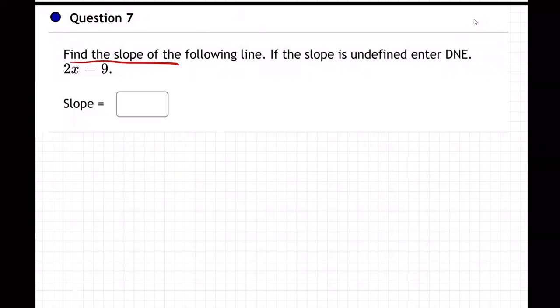Okay, on this one they want us to find the slope, so I'm going to write 2x = 9. So how do you find the slope? In fact, let me write it right here. Whoops, it didn't do anything good. There we go.